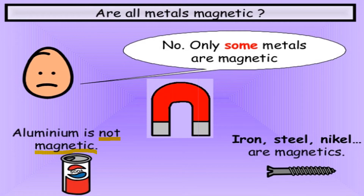If a material is not attracted by a magnet, it is called non-magnetic. The magnetic materials are: number one, iron; number two, steel; number three, nickel. They are all magnetic materials. Not all metals are magnetic — some are magnetic and some are non-magnetic.